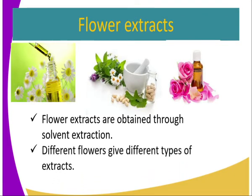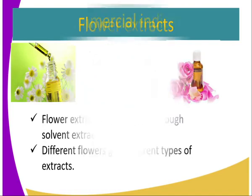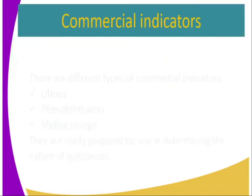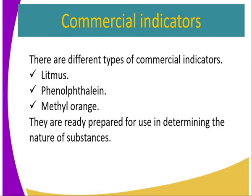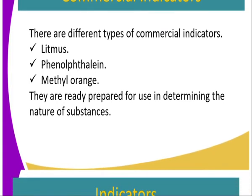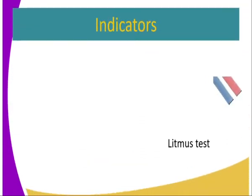Different flowers give different types of extracts. As for commercial indicators, there are different types. The common ones we use are litmus, phenolphthalein, and methyl orange. They are already prepared for use in determining the nature of a substance.